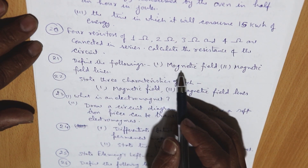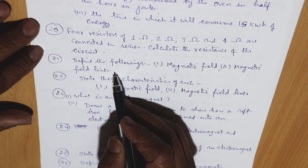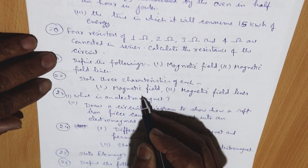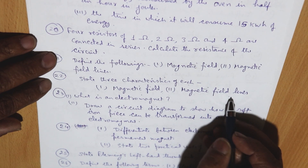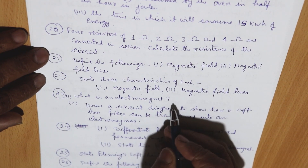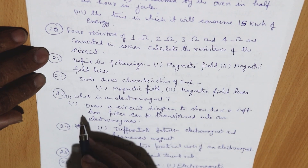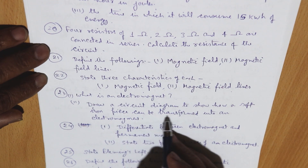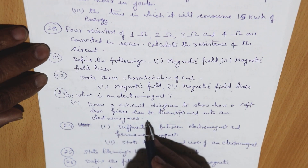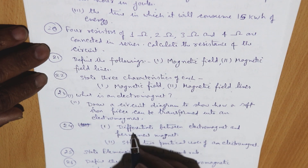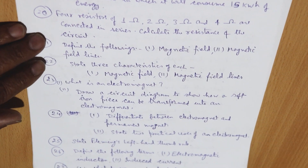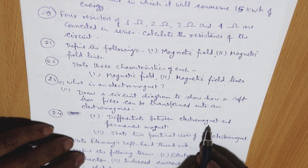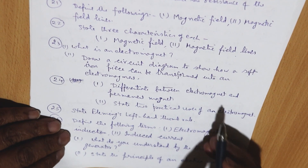Define the following: magnetic field and magnetic field lines — state three characteristics of each. Next question: what is an electromagnet? Draw a circuit diagram to show how a soft iron piece can be transformed into an electromagnet. Differentiate between an electromagnet and a permanent magnet.